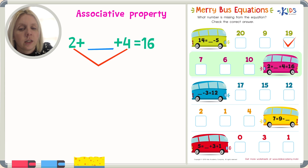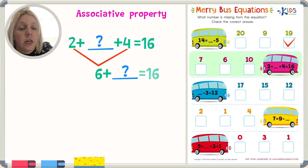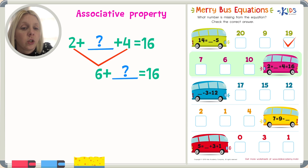Since we're adding these together anyway, I'm just going to turn two numbers into one. Four plus two is six. So now I've got six plus something — there's our question mark — equals sixteen. Now I have three numbers that will go in the house: six, sixteen, and something.